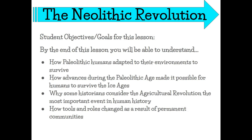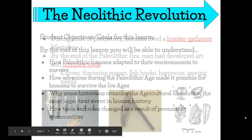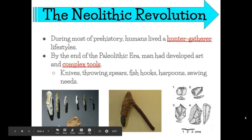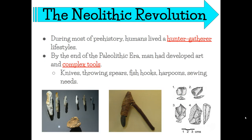The goals for this lesson: by the end you'll be able to understand how Paleolithic humans adapted to their environment to survive, how advances during the Paleolithic Age made it possible for humans to survive in the ice ages, why some historians consider the agricultural revolution the most important event in human history, and how tools and roles changed as a result of permanent communities.